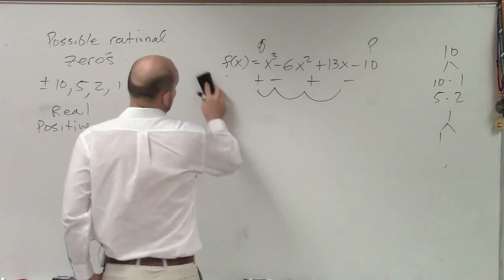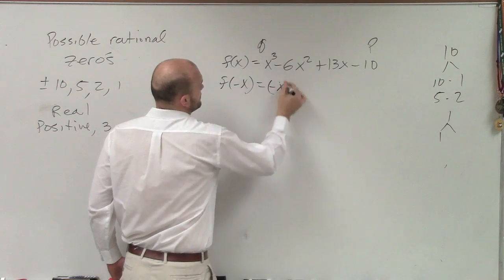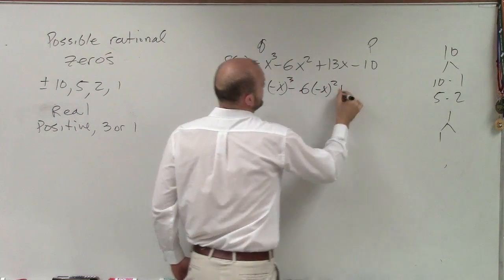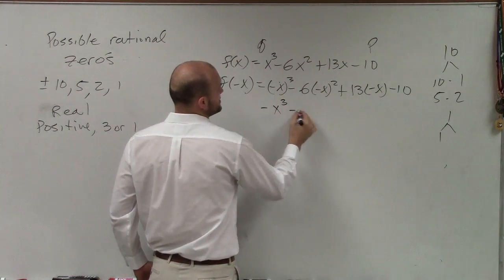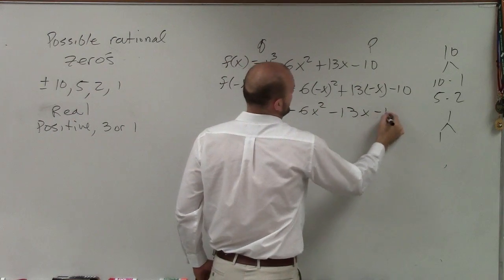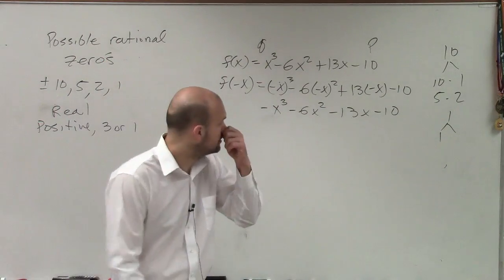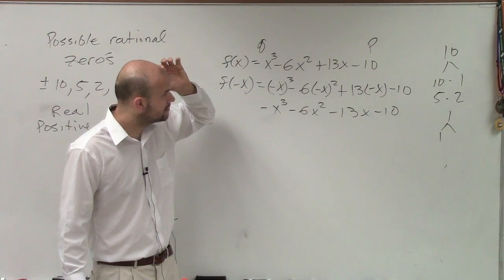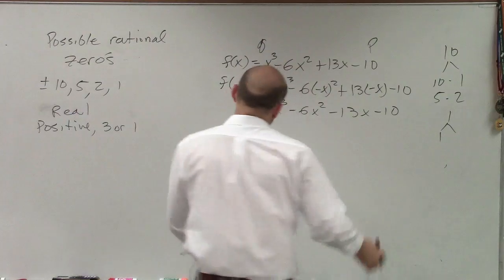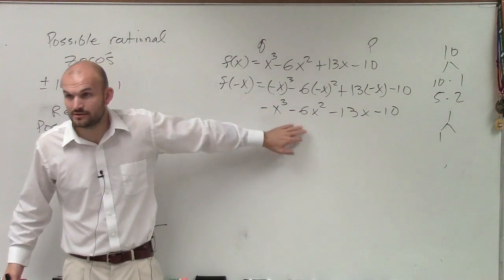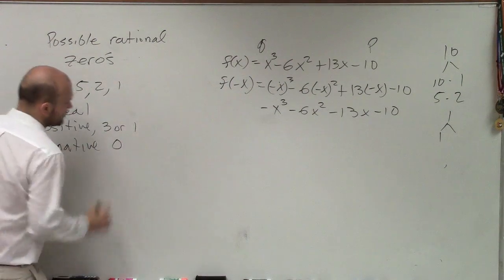If we determine f of negative x, we get negative x cubed minus 6x squared plus 13 times negative x minus 10, which simplifies to: the negative x cubed becomes positive, giving us positive x cubed minus 6x squared minus 13x minus 10. You can see there are no alternating signs, so the number of negative real zeros is zero.